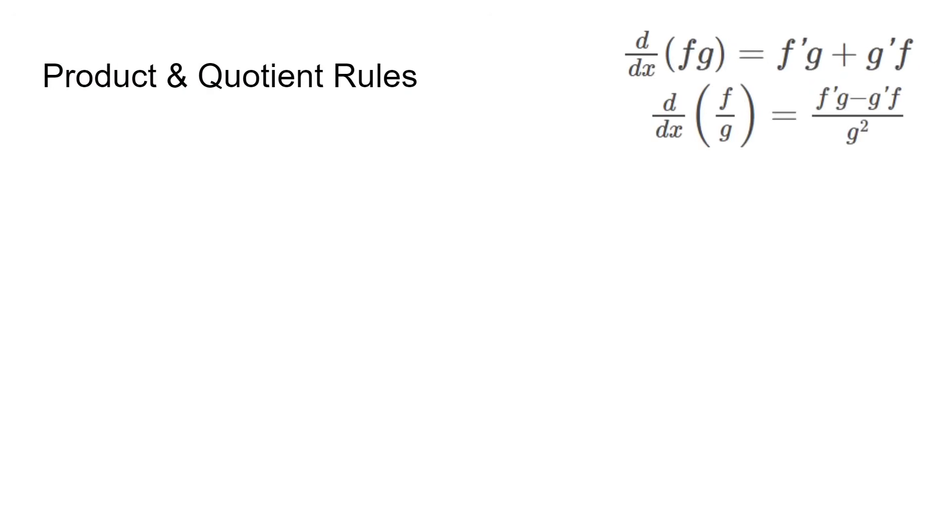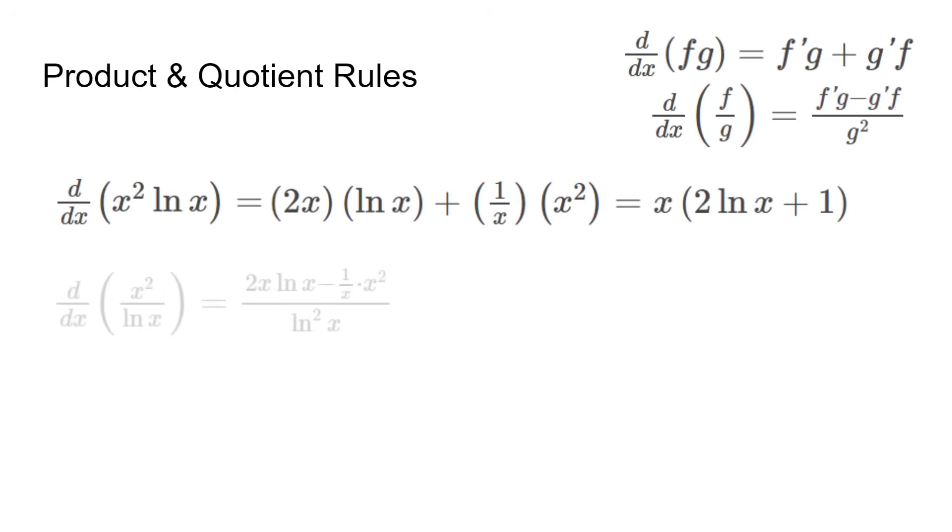We also have the product and quotient rules. In this example, we have x squared times ln x as f times g. The formula is f' times g plus g' times f, so 2 times ln x plus 1 over x times x squared. We simplify and get our answer. The quotient rule is very similar, but you subtract instead, and use g squared as the denominator.